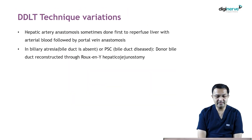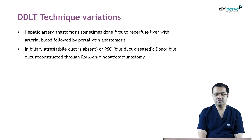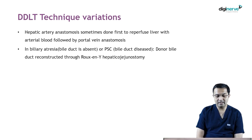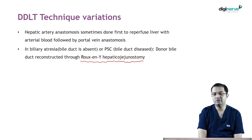There are a couple of variations in DDLT. Very rarely, you can do hepatic artery anastomosis first rather than portal vein anastomosis, and after reperfusion you then do the portal vein anastomosis. In children transplanted for biliary atresia, or in patients with primary sclerosing cholangitis where the bile duct is diseased, rather than bile duct anastomosis you will do a Roux-en-Y hepaticojejunostomy.